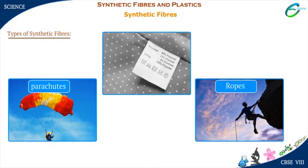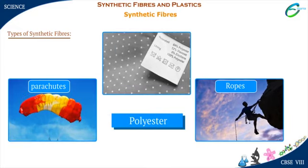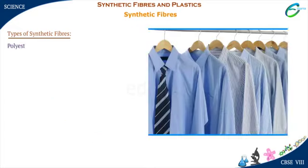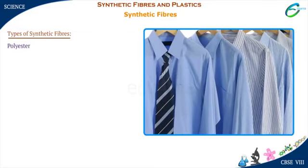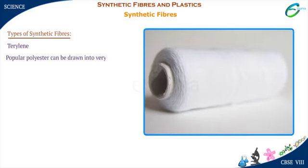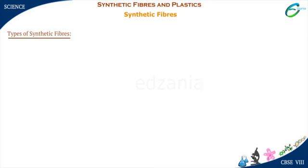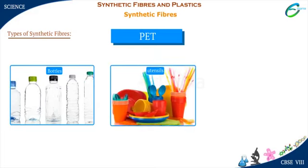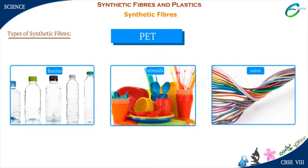Look at this material. It is called polyester. The nice shirts that we wear are made from polyester. Polyester fabric is wrinkle-free, crisp and easy to wash. Terylene, a popular polyester, can be drawn into very fine fibers that can be woven like any other yarn. Another popular form of polyester is PET, used for making bottles, utensils, wires and many other useful products.